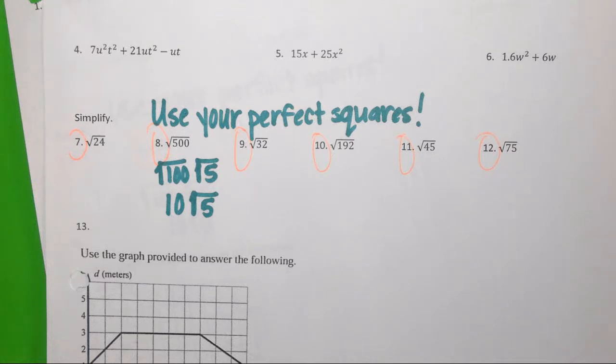It says use your perfect squares. Is 12 or 2 a perfect square? No. How about 2 square root of 6? And how did you get that? I did 24 divided by 4 and got 6, and square root of 4 is 2. Okay, and she is perfect, and we're going to talk about what she did.